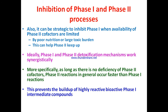If the toxic burden is too high and phase two cannot cope with the large amount of metabolic intermediate produced by phase one, phase one also needs to be inhibited. Ideally, phase one and phase two detoxification mechanisms work synergistically in a ratio so that metabolic intermediates do not accumulate. As long as there is no deficiency of phase two cofactors, the phase two reaction generally occurs faster than phase one.